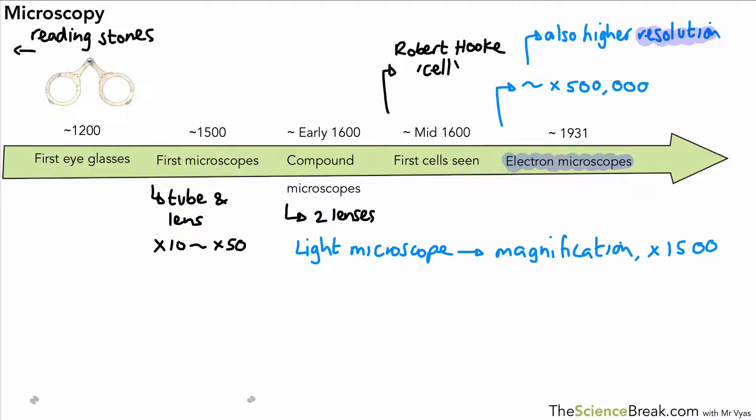That allows for things to be seen much more clearly. Just to give an example of how that works, I've got the same object magnified by the same amount of times. Here it is magnified the first time and you can see the outline there.